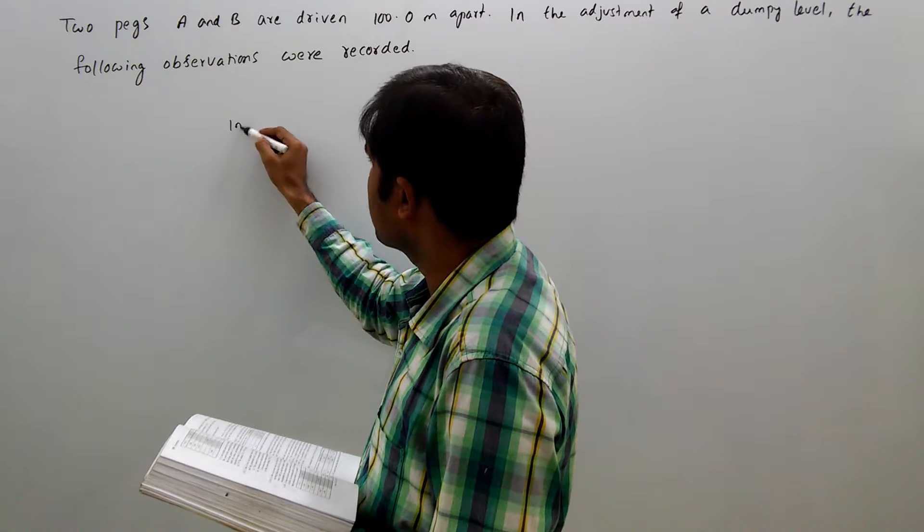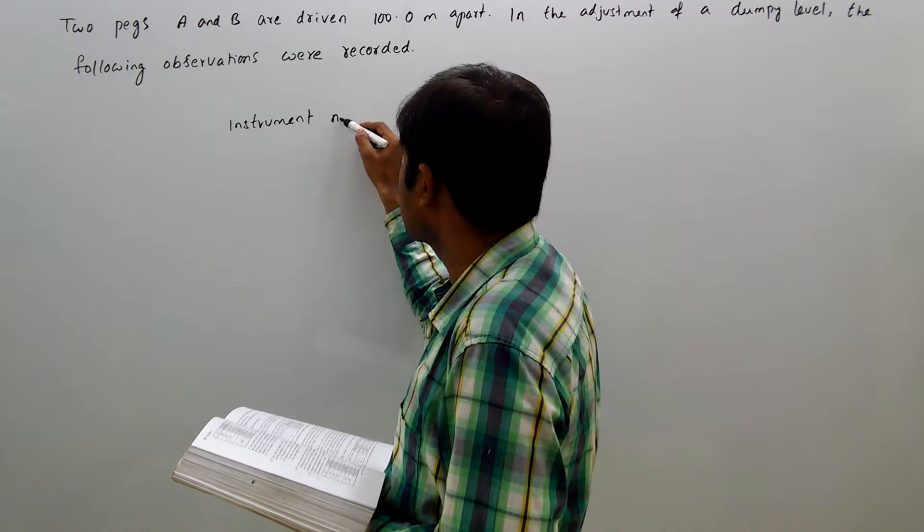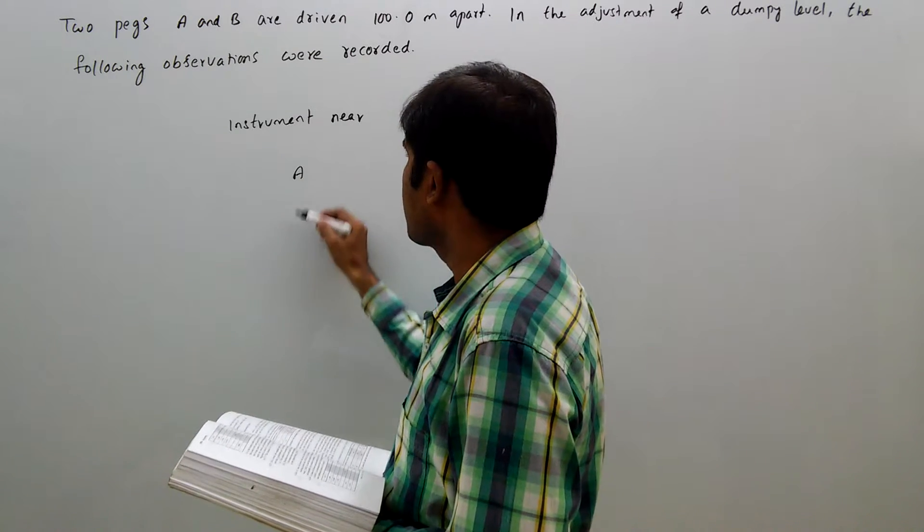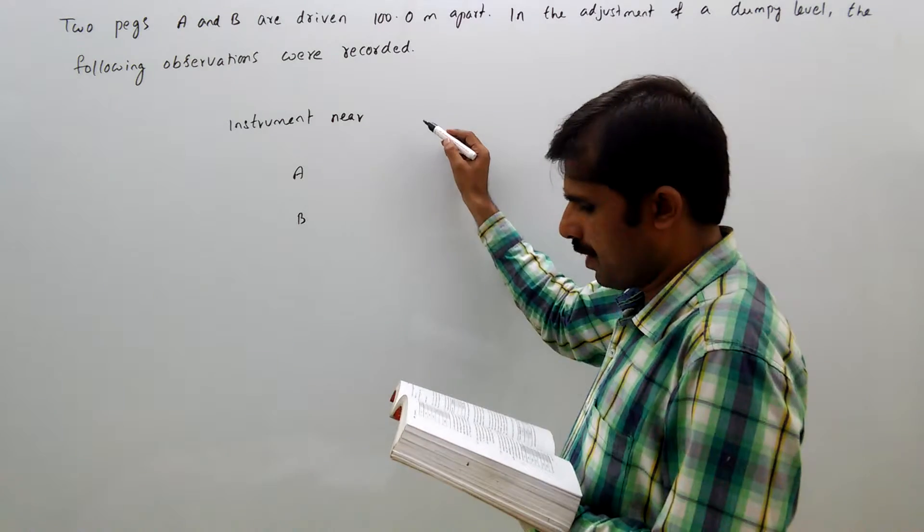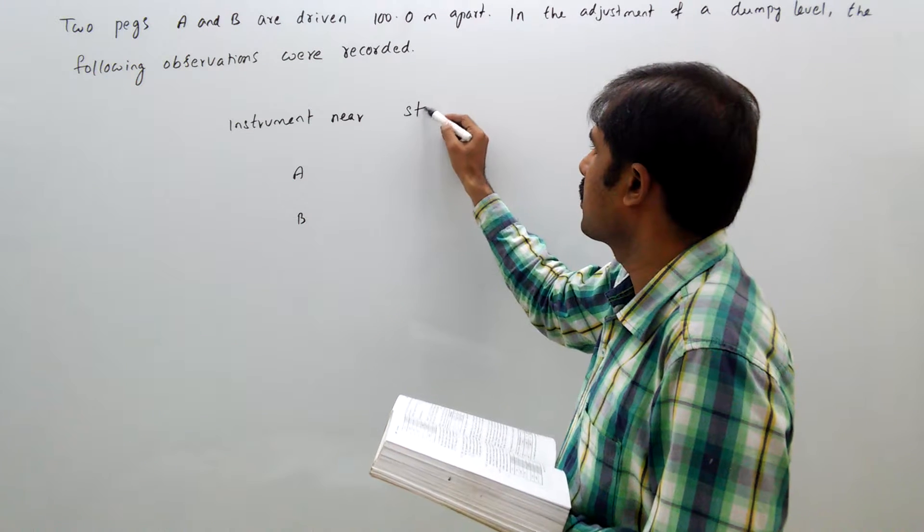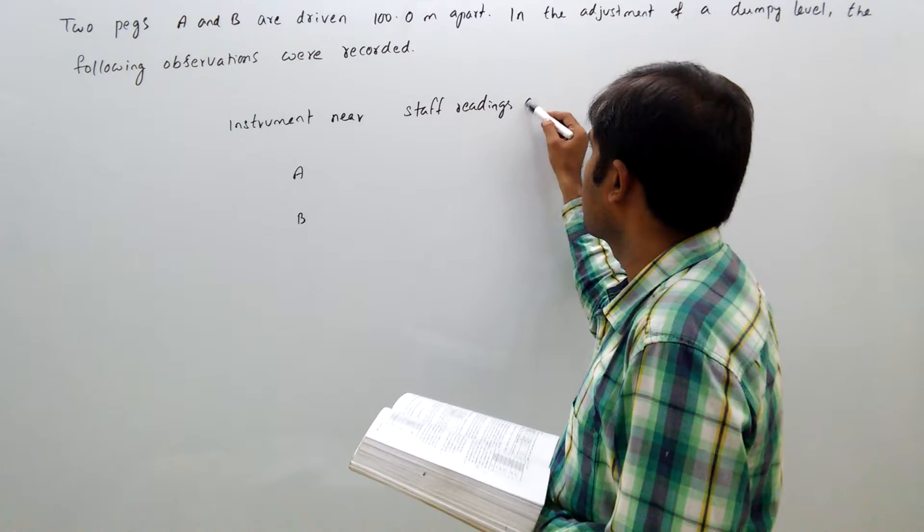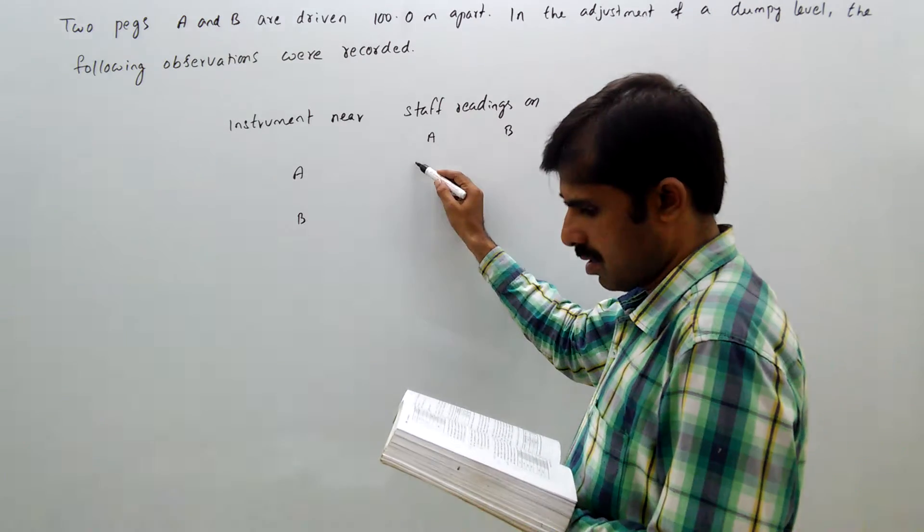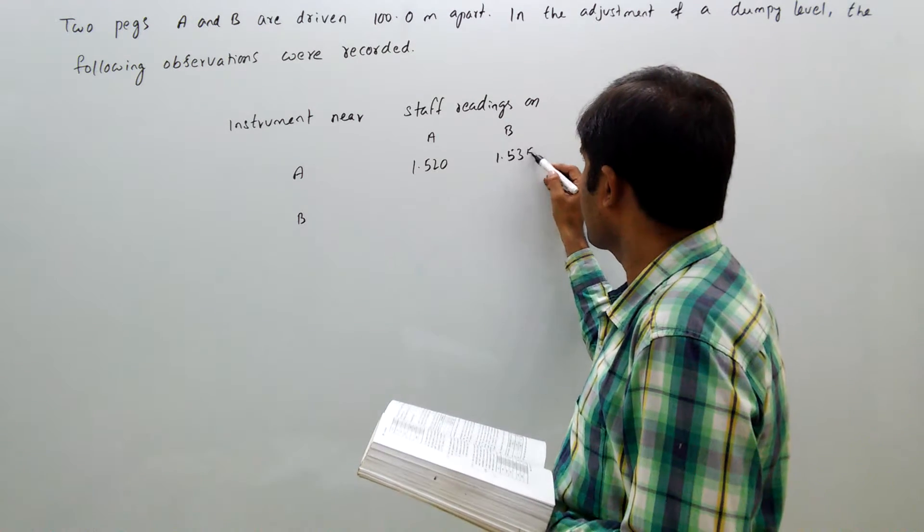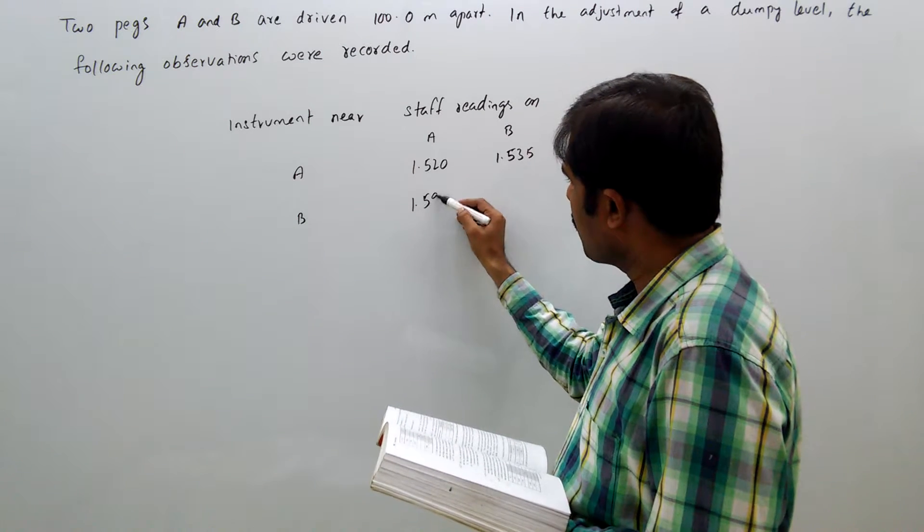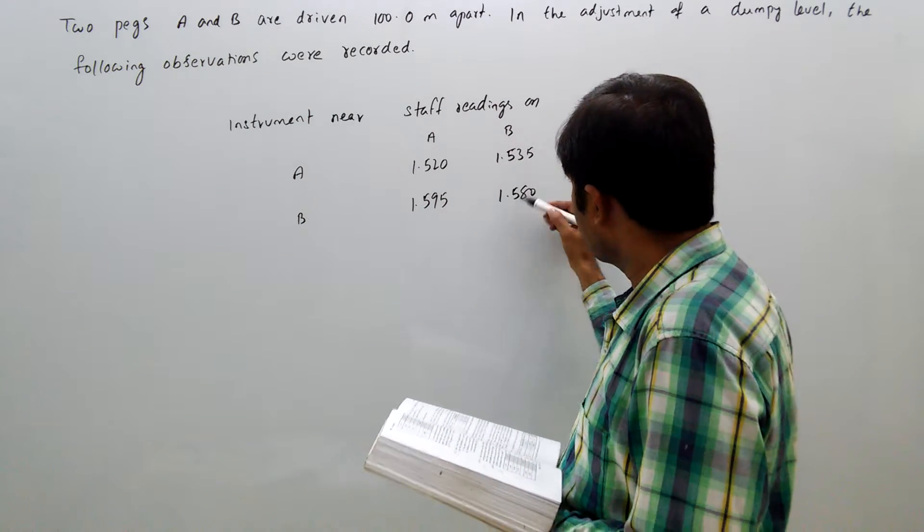Instrument near A, B. Staff readings on A, B: 1.520, 1.535, 1.595, 1.580.